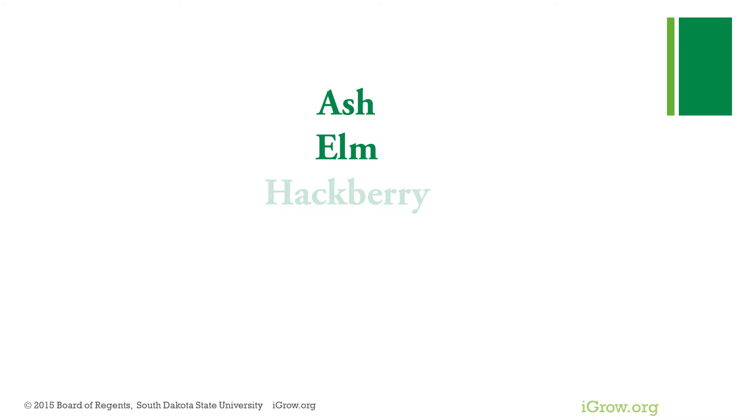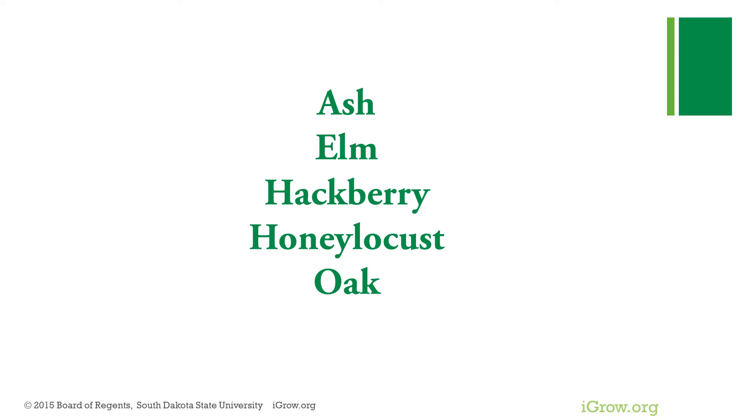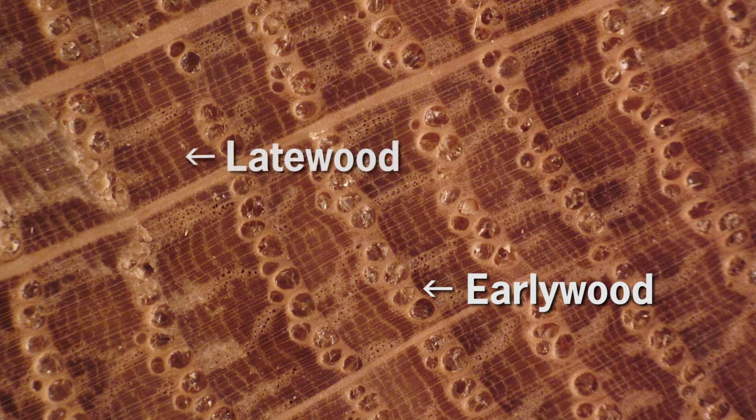Some woods, such as those of ash, elm, hackberry, honey locust, and oak, are ring porous, meaning there is an abrupt transition between the size of the pores formed early in the growing season — the early wood — and those forming later in the season, the late wood.